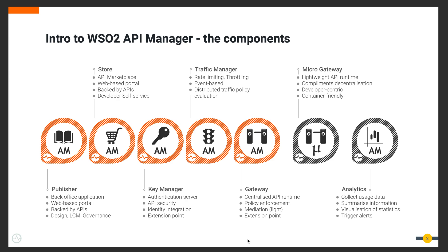The publisher and the developer portal make up the so-called management plane and are two web portals. The API publisher is for API designers and product managers, and the developer portal is for API consumers. The key manager and the traffic manager together form the control plane — the key manager relating to security of APIs and the traffic manager relating to access control and throttling. The gateway and the micro gateway fall under the data plane, handling API calls at runtime together with policy enforcement and mediation.